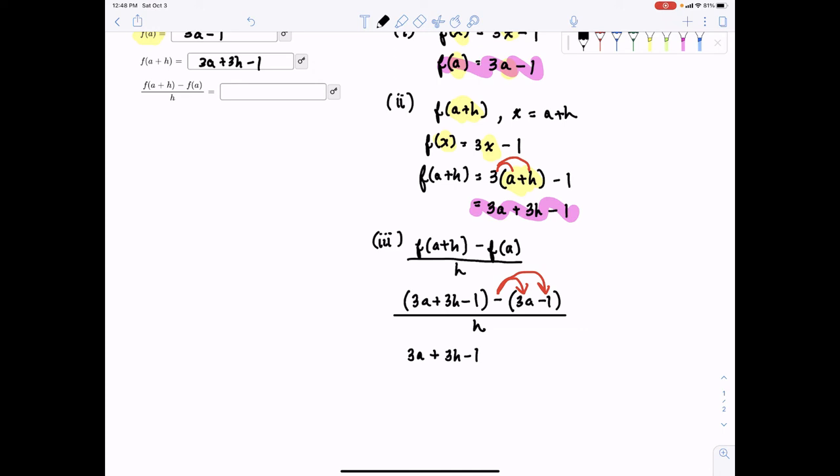And the next parentheses we have minus 3a plus 1. And so when we go ahead and reduce the numerator, we can see some things cancel out. Like the 3a's, the ones, and now we're left with only 3h divided by h. And those reduce out. And notice all we're left with is 3.